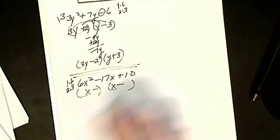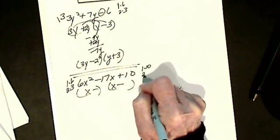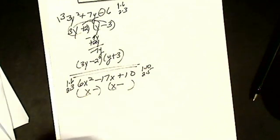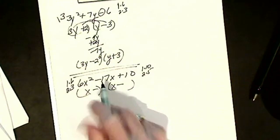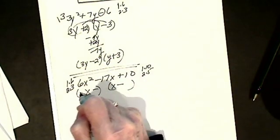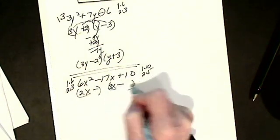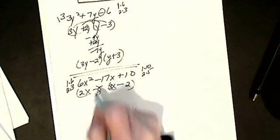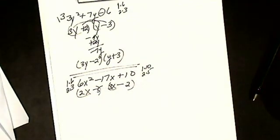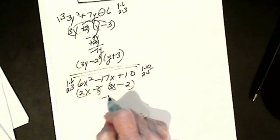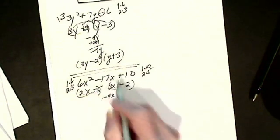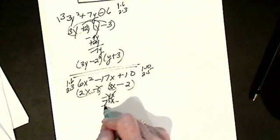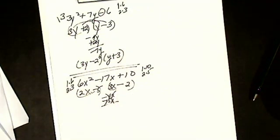My choices are 1 and 6 or 2 and 3. My choices are 1 and 10 or 2 and 5. And there's varied combinations. I have no idea. I'm going to try my pairs closest together first. So without any stress, I'm going to put in 2 and 3 and 2 and 5. It might work. I check my outers. I get minus 4x. My inners. Minus 15x not working. I don't get minus 17.